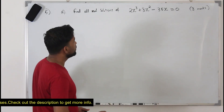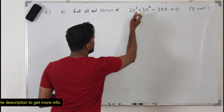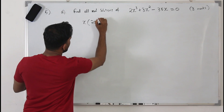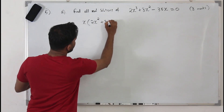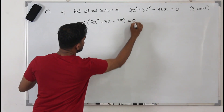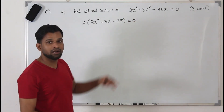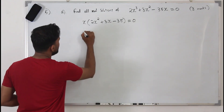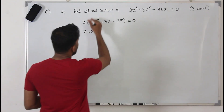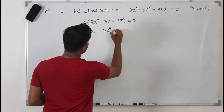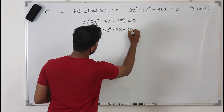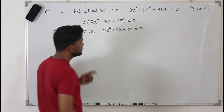To solve this cubic equation, we take x as a common factor. It becomes x(2x² + 3x - 35) = 0. Setting each factor equal to zero separately: x = 0 is one solution, and we also have the quadratic expression 2x² + 3x - 35 = 0 to solve.